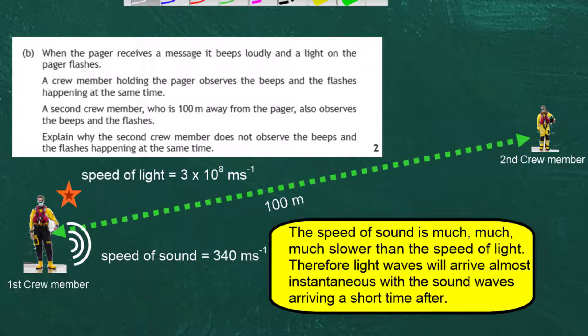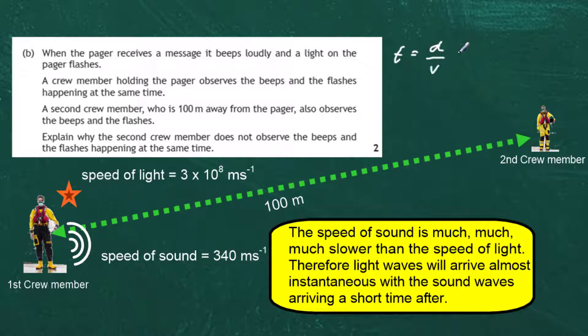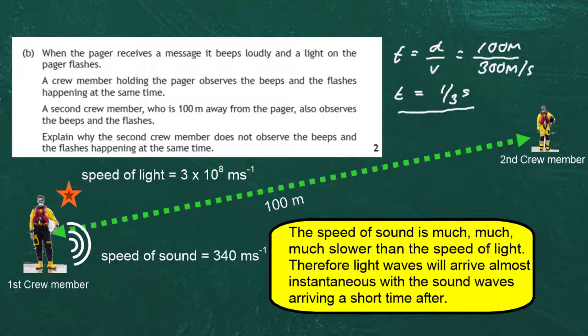We can calculate how long the sound takes to arrive. Time equals distance divided by speed. The distance is 100 metres and, estimating the speed of sound at about 300 metres per second for a quick calculation, time is approximately one third of a second. So when the flash goes off, the second crew member sees it instantly, but hears the pager about a third of a second after seeing the flash.